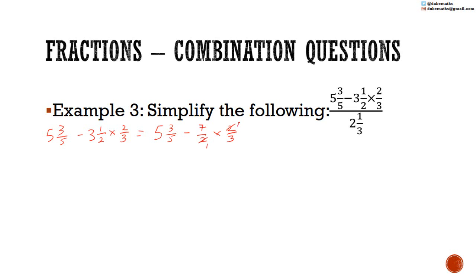2 into 2 is 1, 2 into 2 is 1. We have 5 and 3 fifths minus — 7 multiplied by 1 is 7, 1 multiplied by 3 is 3 — minus 7 over 3.